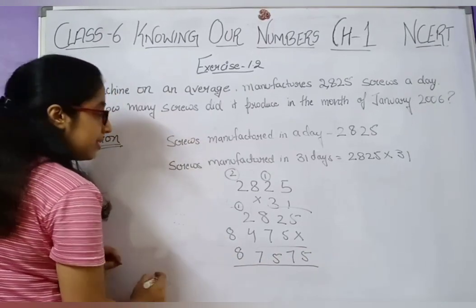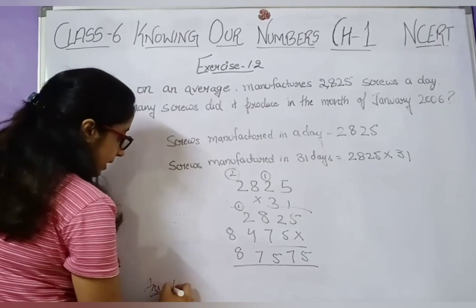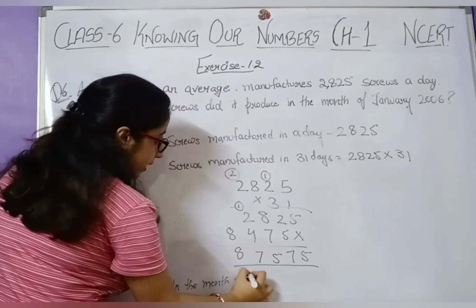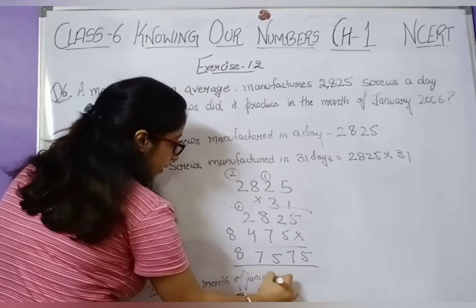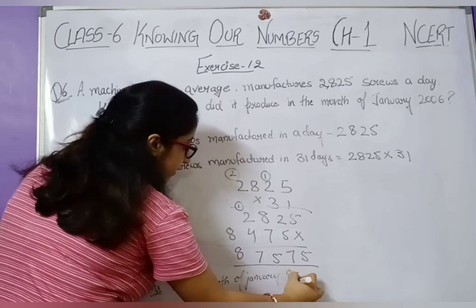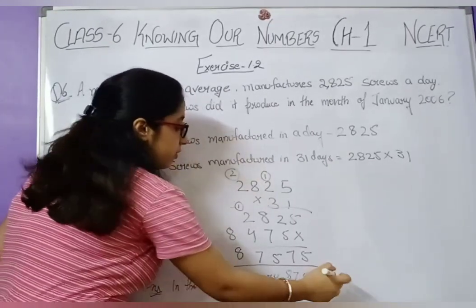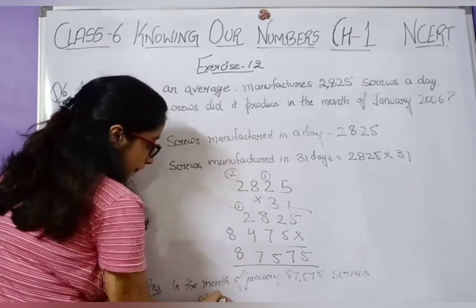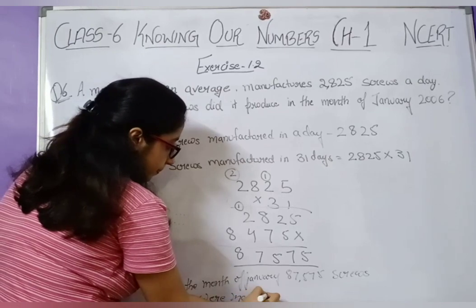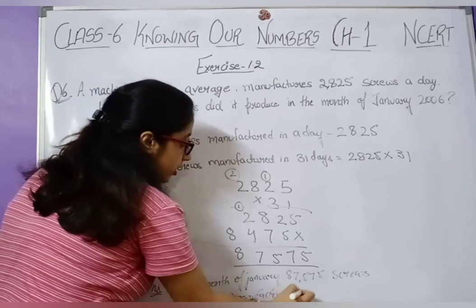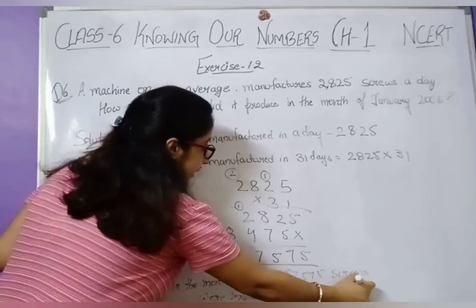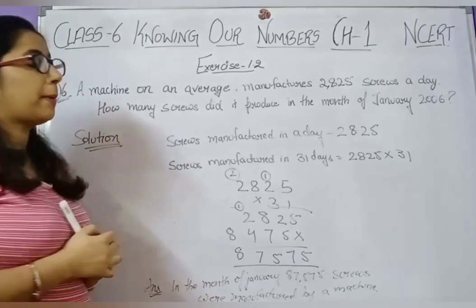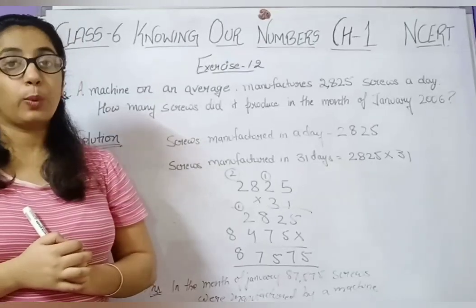So you will write: in the month of January, 87,575 screws were manufactured by the machine. Have you understood this question? This is your question number 6. Let's start with question number 7.